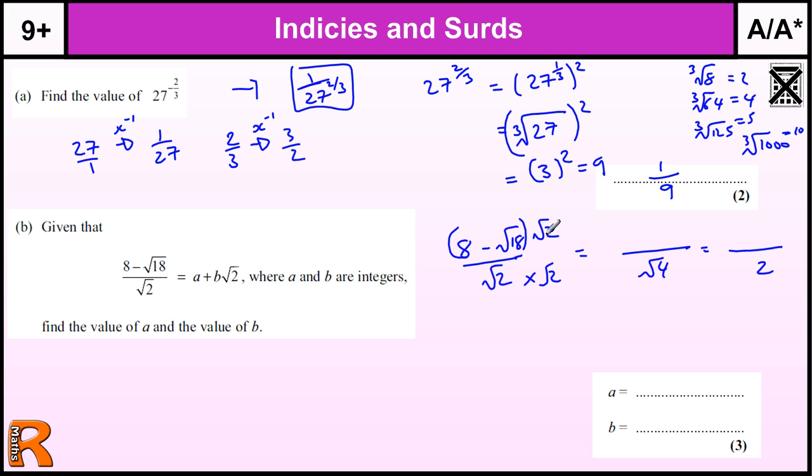Now this top bit times by 2, we get 8 lots of root 2, and we times 8 by root 2, minus root 18 times root 2. The rule we can use here is when we're multiplying square roots, the square root of 18 times the square root of 2 is equal to the square root of 18 times 2. That doesn't work for adding or subtracting, but it does work for multiplying and dividing.